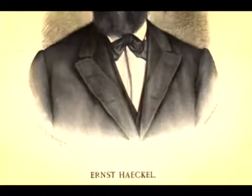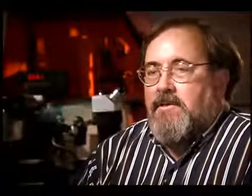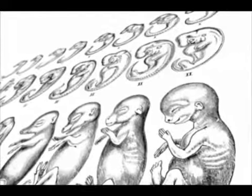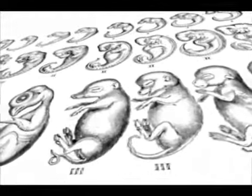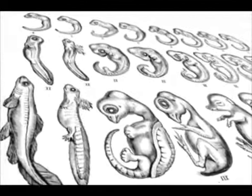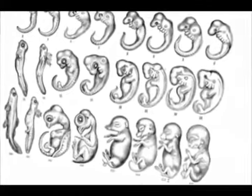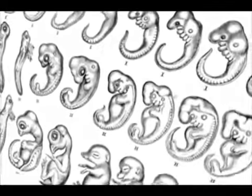In the late 1800s, German naturalist Ernst Haeckel produced drawings that seemed to confirm Darwin's claim. Haeckel was a German biologist and artist, a contemporary of Darwin's, who made famous drawings of vertebrate embryos — fish, humans, salamanders, chicks, turtles, and so on. In those drawings, Haeckel tried to show that all these different vertebrates look very much the same as early embryos.